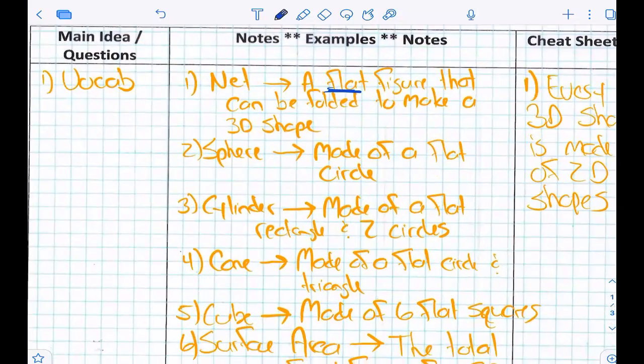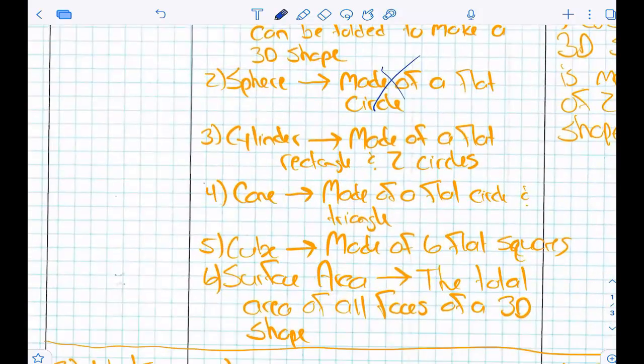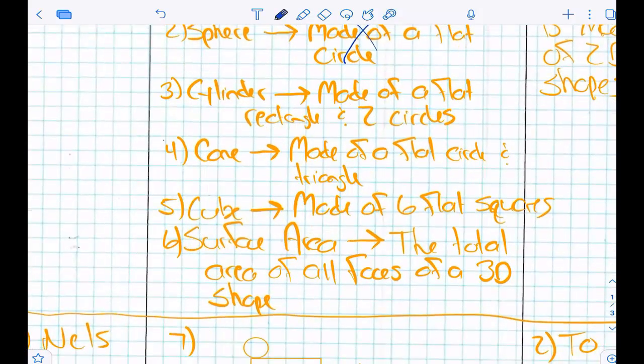Sphere - let's not worry about a sphere. Cylinder: made of a rectangle and two circles. Cone: we'll talk about what all these are as we go into nets. Cube: you guys know what a cube is. Surface area - this is a big one.